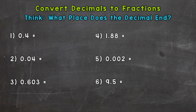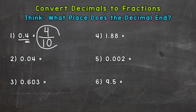Let's jump right into number one where we have four tenths. That decimal ends in the tenths place, so that's going to be the denominator for our fraction. Wherever the decimal ends, that's going to be your denominator. We then look at what number is behind the decimal — we have a four, so that's our numerator. So four tenths as a decimal and four tenths as a fraction are equivalent; they hold the same value.